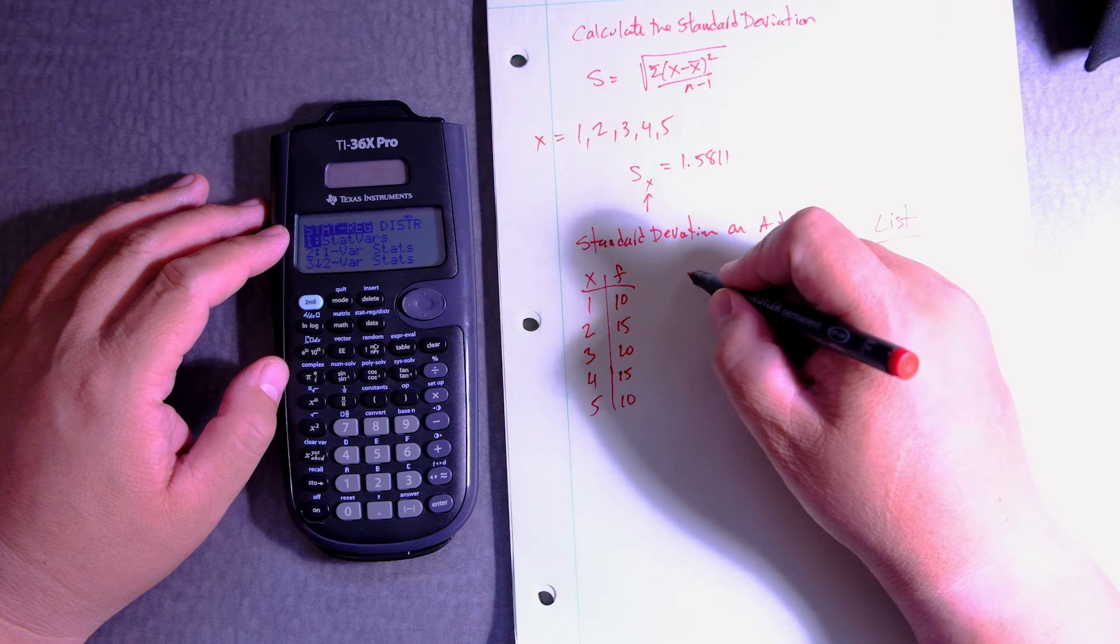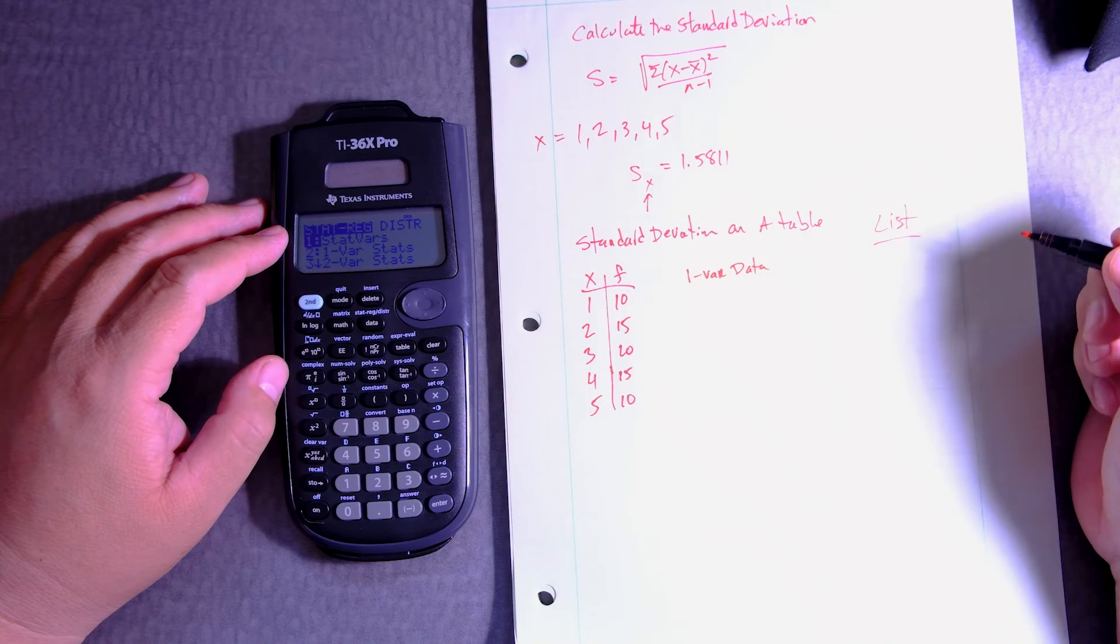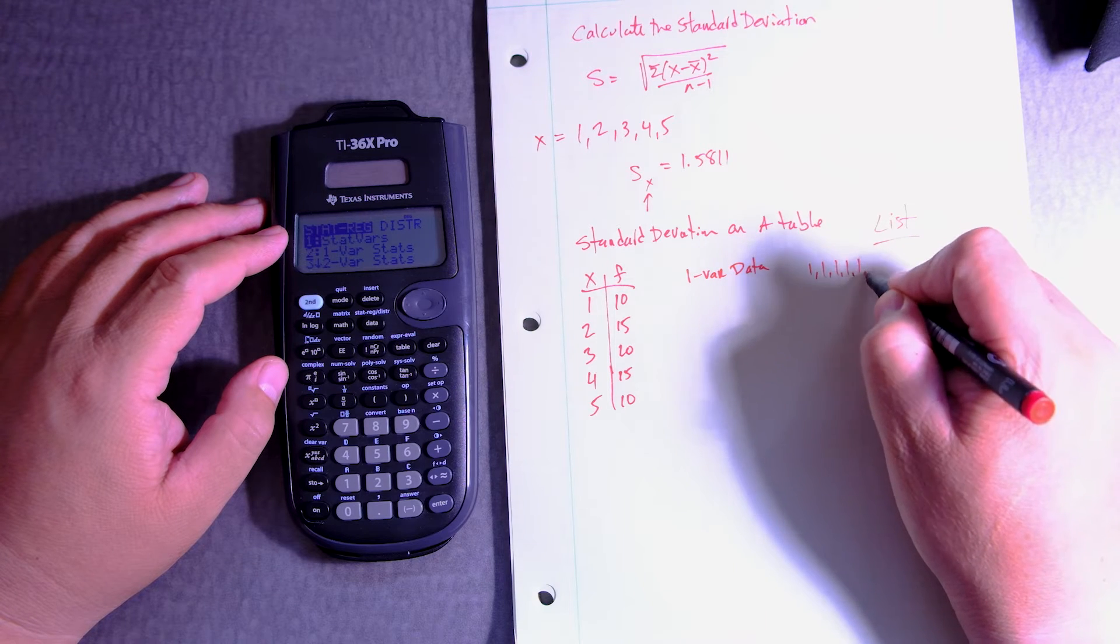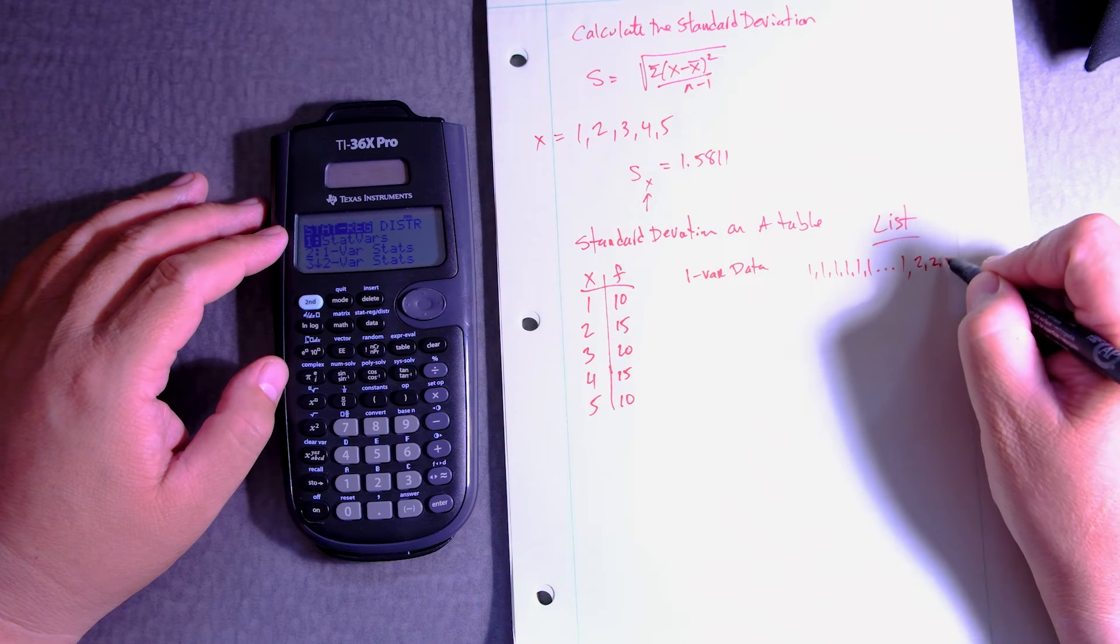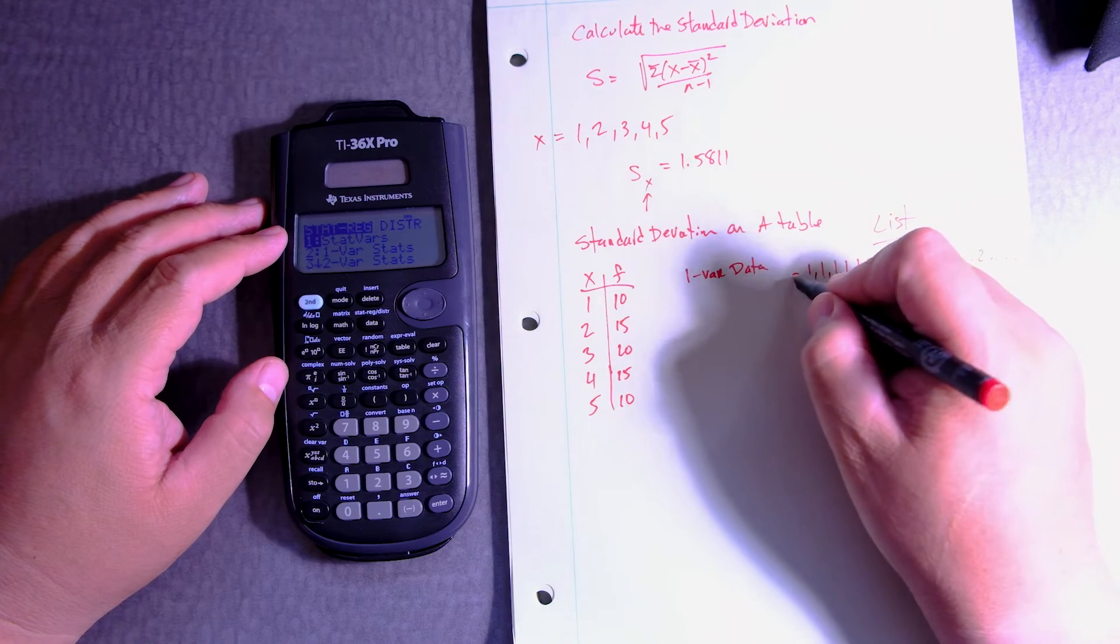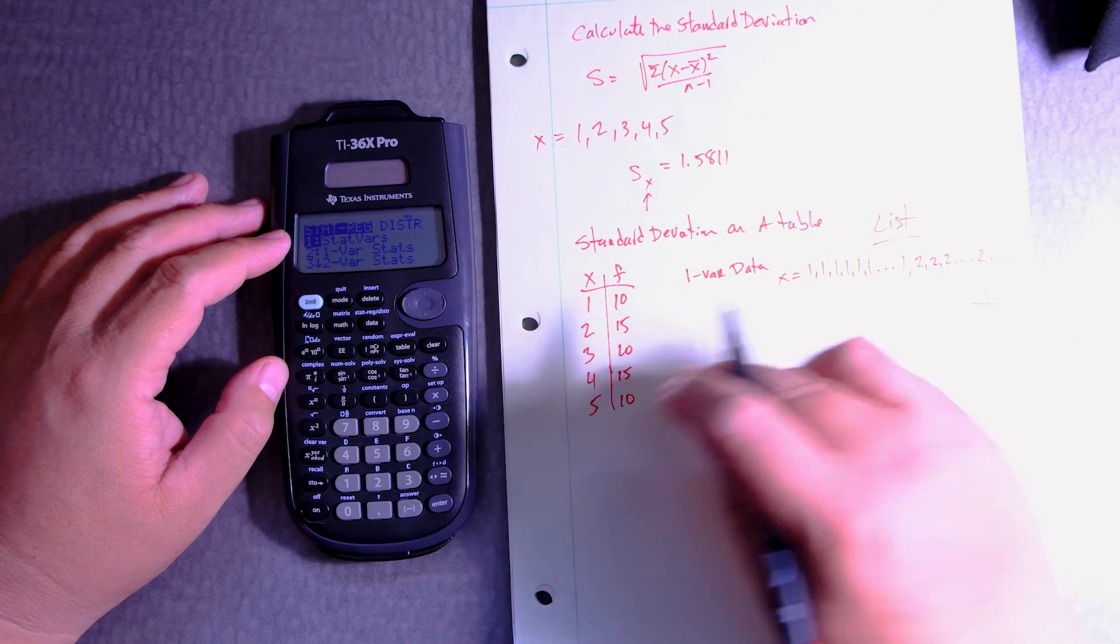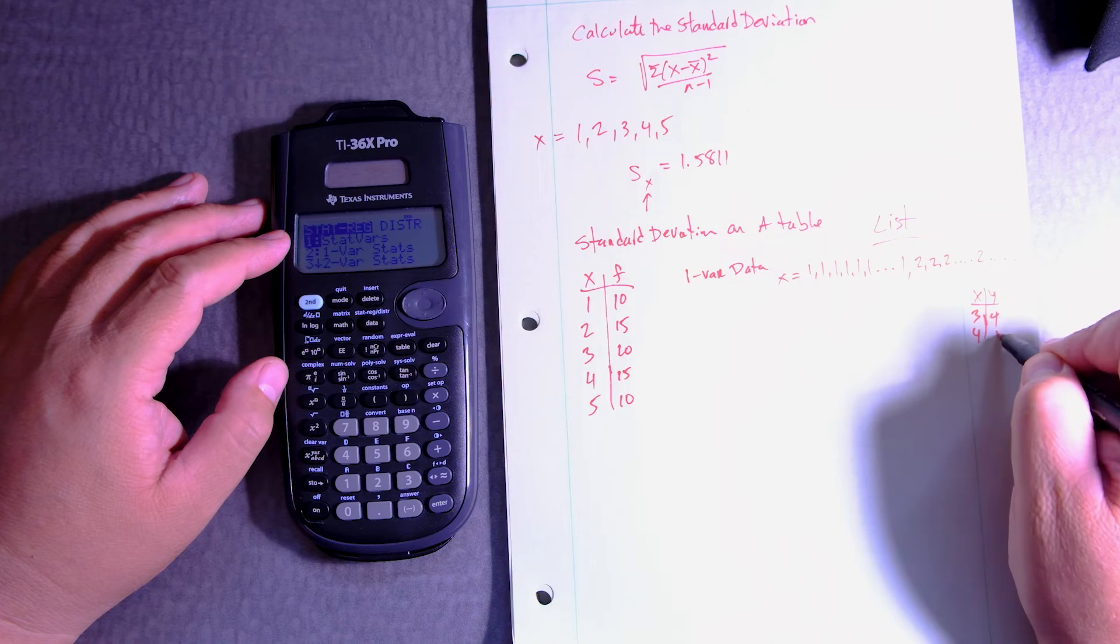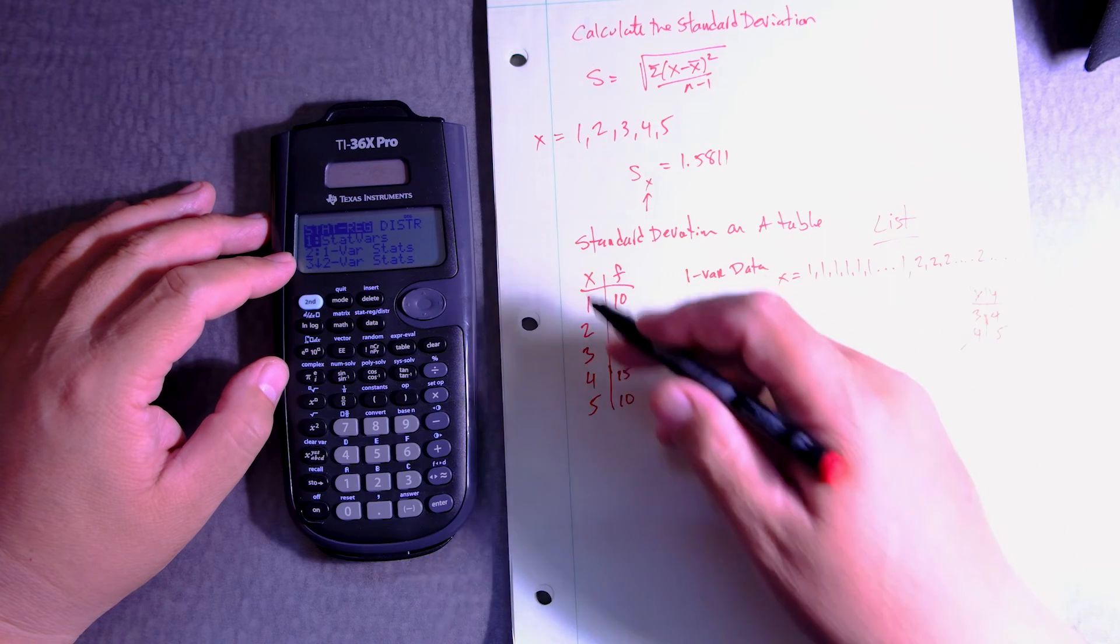And this still is a one variable data set. How come? Well, I have 10 ones, so 1, 2, 3, 4, 5, 6, until 10. And then 15 twos: 1, 2, 3, up to 15 of them, and so on. So this is still one variable. This is a frequency distribution table. This is not one of those tables that are x, y where you can plot points. That's for a different subject. So one variable.